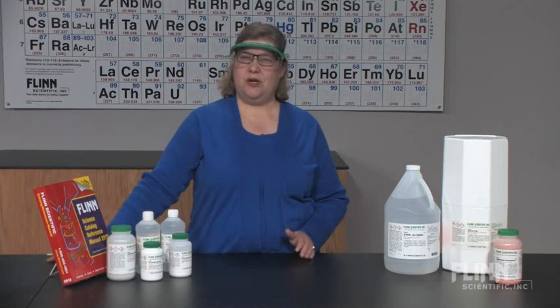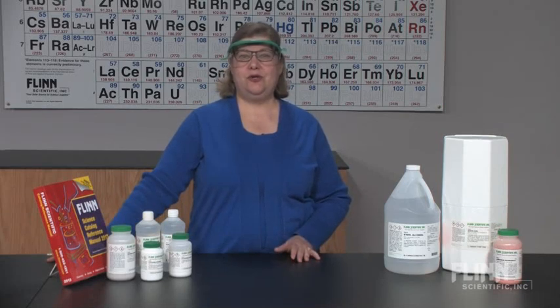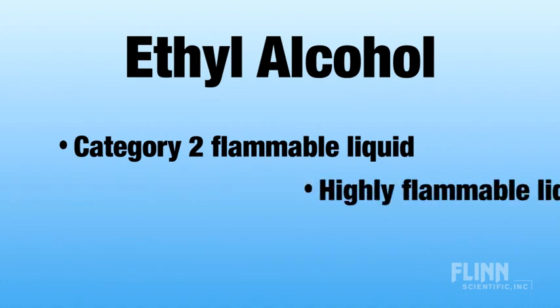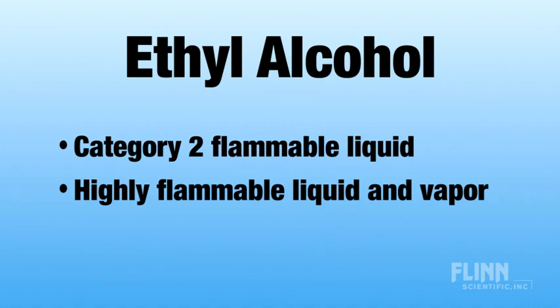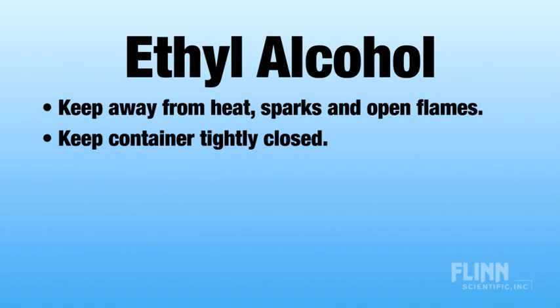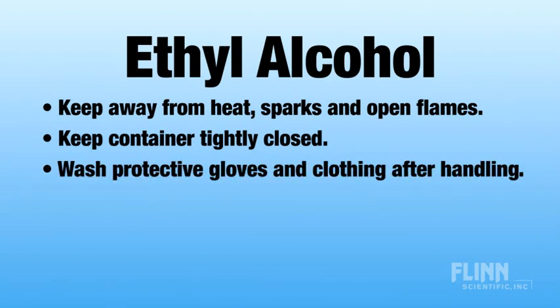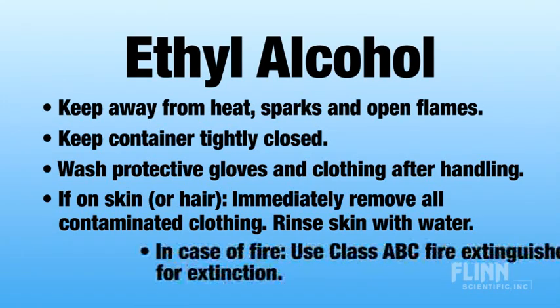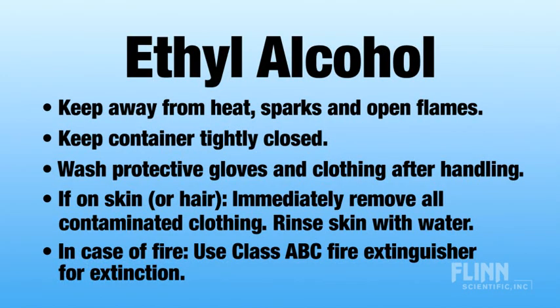To illustrate how hazard and precautionary statements work together to protect you when using a chemical, consider the following label elements for a flammable liquid such as ethyl alcohol. With a flashpoint of 14 degrees Celsius, ethyl alcohol is classified as a Category 2 flammable liquid. The assigned hazard statement is highly flammable liquid and vapor. There are five associated precautionary statements: keep away from heat, sparks, and open flames; keep container tightly closed; wash protective gloves and clothing after handling; if on skin or hair, immediately remove all contaminated clothing and rinse skin with water; and in case of fire, use a Class ABC fire extinguisher for extinction.